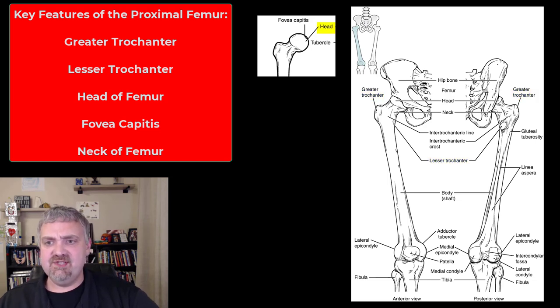Then I have this little separate image because you can't really see the head very well, but then you have the head of the femur and on the tip of the head there is a fovea capitis. So the head, the fovea capitis, and the neck of the femur are also important structures.